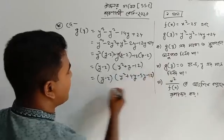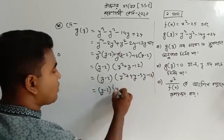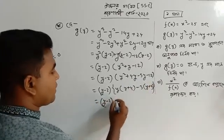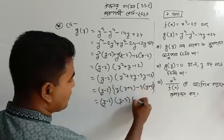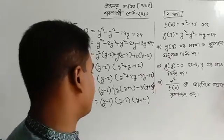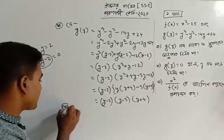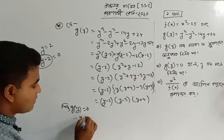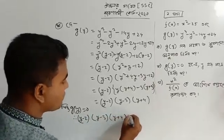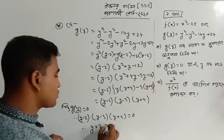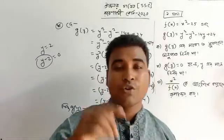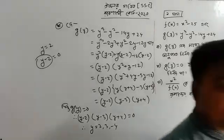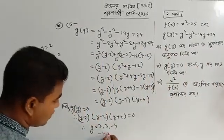You can keep on: y plus 4, y minus 3. So factor y plus 4 and factor y minus 2 and factor y minus 3. So y minus 2, y minus 3, y plus 4 equal to zero. That means y equals 2, y equals 3, y equals minus 4.